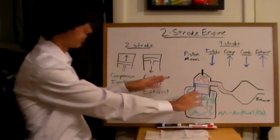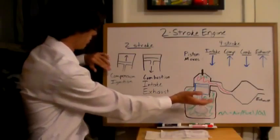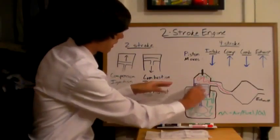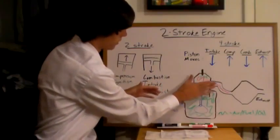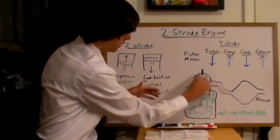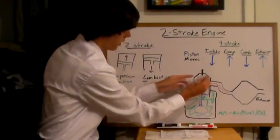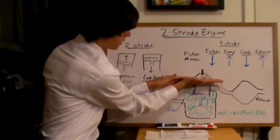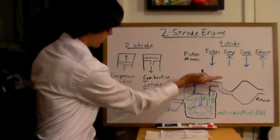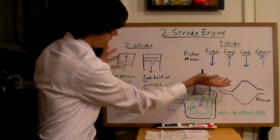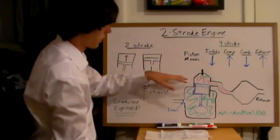I've drawn a diagram here to help explain that. First we'll look at the piston moving up. You've got the gas in this chamber, and it's going to push the piston up, pressurizing that air-fuel-oil mixture. Then once it's right at the very top, the spark plug will ignite it and you'll have combustion. That's your ignition step, which is pretty similar to a four-stroke engine.